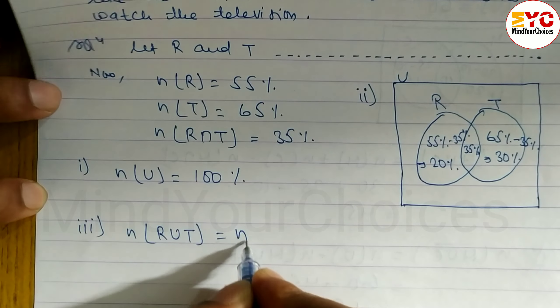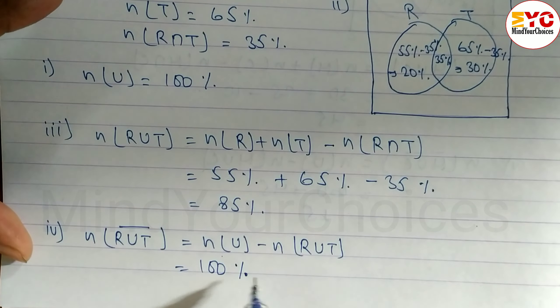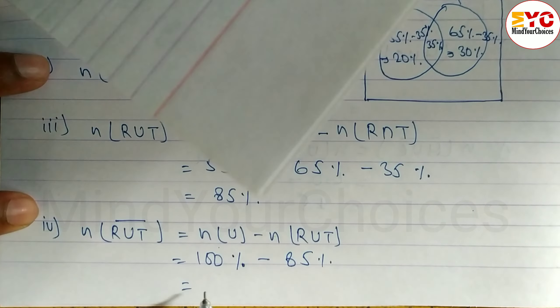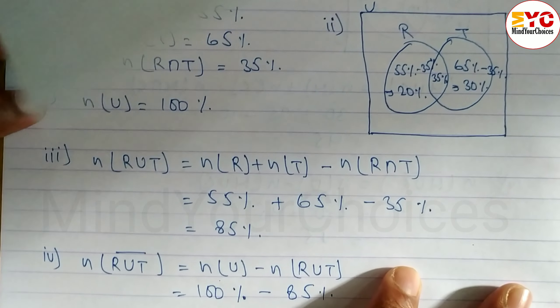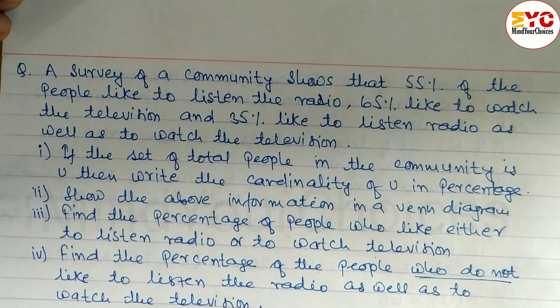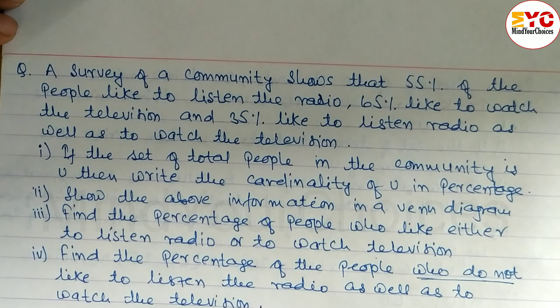Number 4: Find the percentage of people who do not like to listen to radio as well as watch television. 'Do not like' means union complement — n(R ∪ T)'. Formula: n(U) − n(R ∪ T) = 100% − 85% = 15%. So 15% of the community does not like to watch television or listen to radio. Hope you understand — this question is from Class 10 Sets and you will score 5 marks from here in the SEE examination.